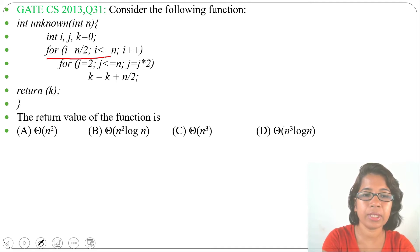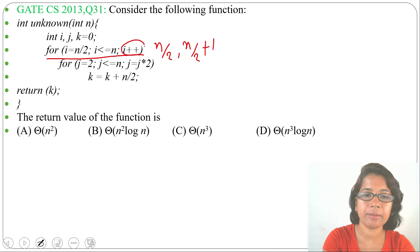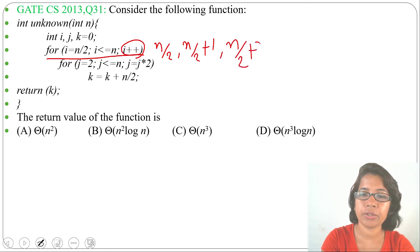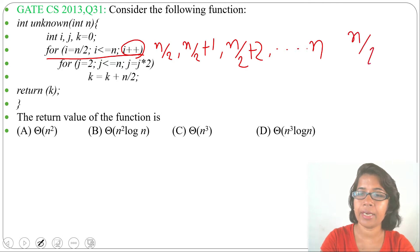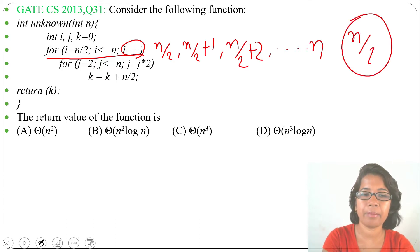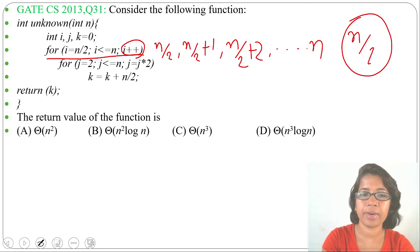Let's analyze the outer for loop. Initially i equals n/2. Next it will be n/2 plus 1, then n/2 plus 2, and so on, until it finally reaches n. So how many times does it change? It changes n/2 times, starting at n/2 and incrementing by 1 until reaching n. The outer for loop runs n/2 times.